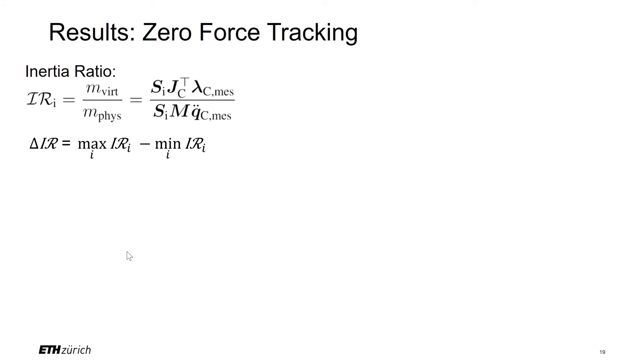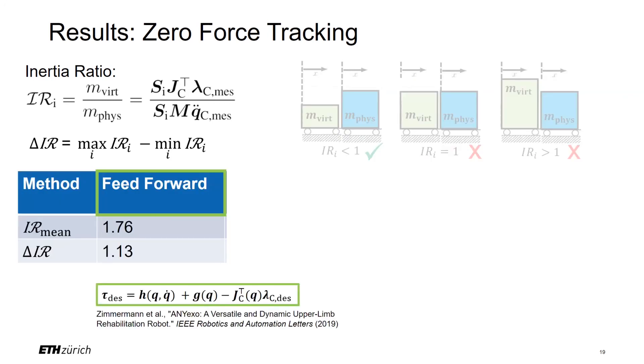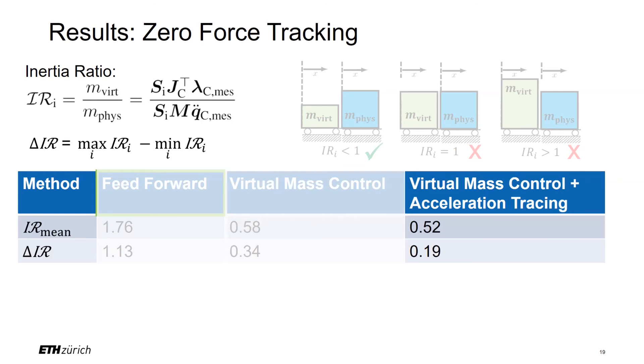The inertia ratio describes how large the virtual felt inertia is with respect to the physical reflected inertia of the robot. If the inertia ratio is smaller than one, the felt inertia is lower than the one of the robot. If the value is equal to one, we feel the effective inertia of the robot superposed to the desired interaction forces. First, we tested the feed-forward controller, which has shown to perform on par with the state-of-the-art. We can see that the mean inertia ratio is larger than one, which lets us assume that there is non-negligible friction present in the system. Further, the joint-specific inertia ratio differs much from joint to joint, leading to an inconsistent feeling. When using the virtual mass controller, we achieve a reduction in the inertia ratio of a factor of three. Further, the difference in performance per joint is reduced. If we additionally apply the acceleration tracking controller, the variance is further lowered. However, the transparency is not much improved.